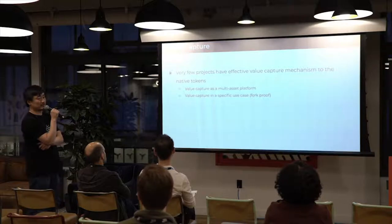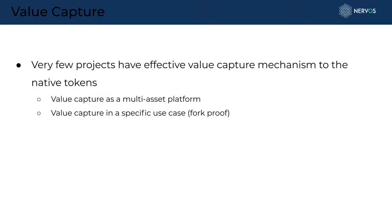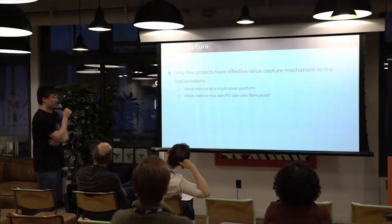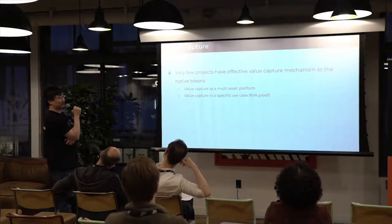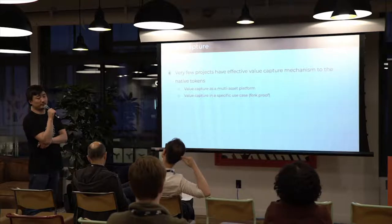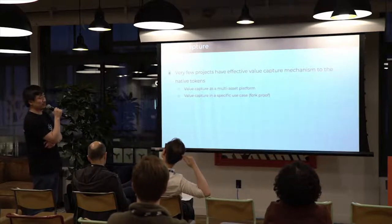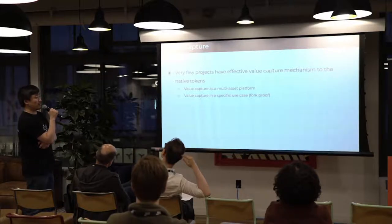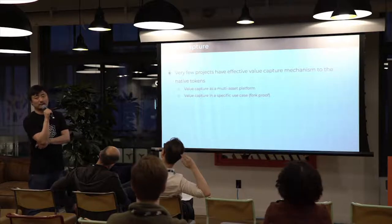This leads us to realize we need something called value capture — as designers of layer-one protocols we want to make sure the platform captures part of the economic value of the ecosystem running on top of it. We also thought about value capture in the context of forks: when the product is mature and forks happen, what is the advantage of the canonical chain against the fork, and how can we prevent the value of the blockchain from getting diluted or forked away?